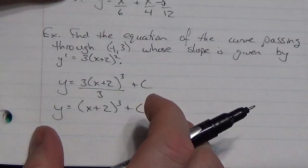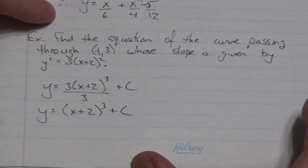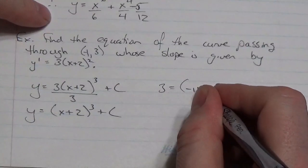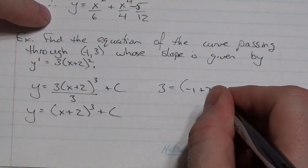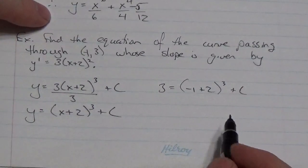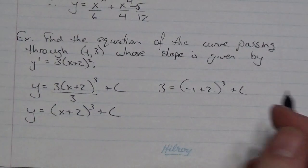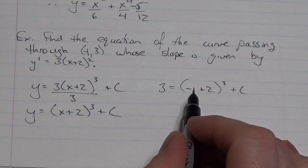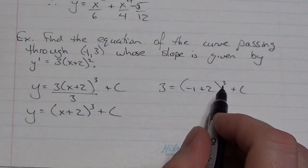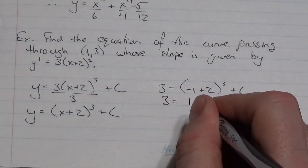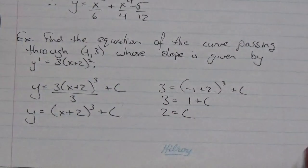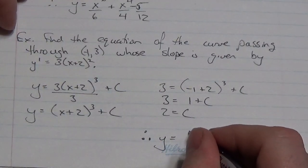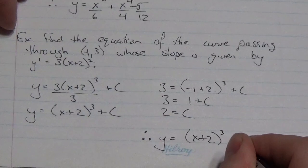Now, I'm going to use my boundary condition to figure out what the arbitrary constant is. I know that the y-coordinate is supposed to be 3. So I'll make that negative 1 plus 2 cubed plus c. Negative 1 plus 2 is 1, cubed is 1. So this becomes 3 = 1 + c. Then just subtract. So 2 = c. Therefore, for my final solution, I've got y = (x + 2)^3 + 2.